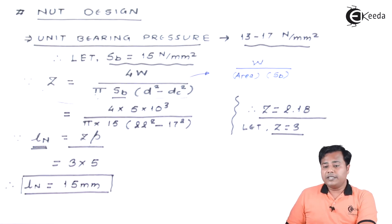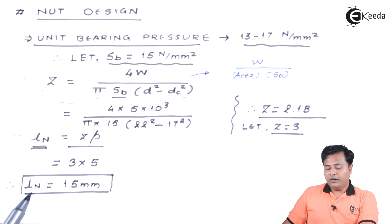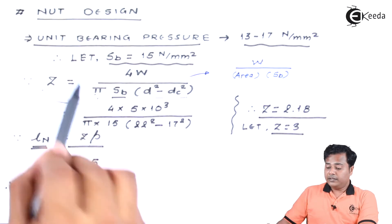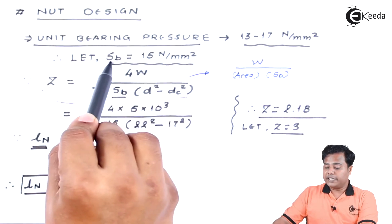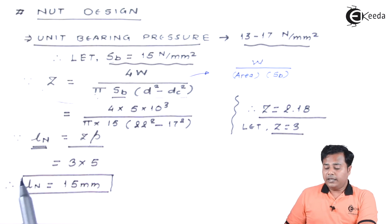In short, we have designed the nut only for one factor, considering the unit bearing pressure SB, so that the particular nut is going to be safe under this particular condition of length and other parameters.